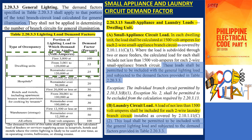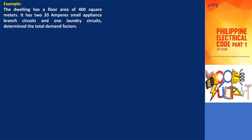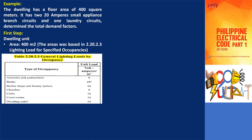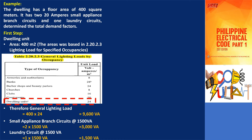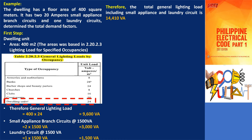Let's have an example to understand further. The dwelling unit has a floor area of 400 square meters. It has two 20-ampere small appliance branch circuits and one laundry circuit — determine the total demand factor. The first step is to determine the general lighting load. For dwelling units, the unit load is 24 volt amperes per square meter per table 2.20.2.3. Therefore, the general lighting load is 400 square meters multiplied by 24 VA/sqm, which gives us 9,600 volt amperes. For small appliance and laundry circuits, the branch circuit loads are 1,500 VA per circuit. Two small appliance circuits give 3,000 VA, and the laundry circuit is 1,500 VA, for a subtotal of 14,100 volt amperes.